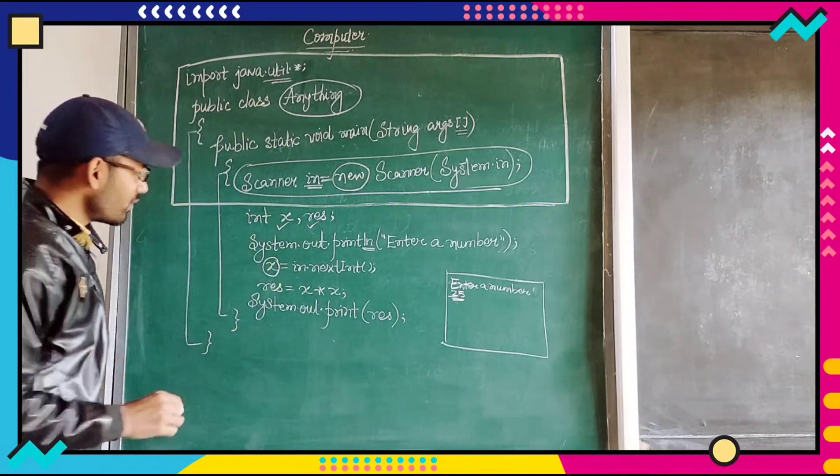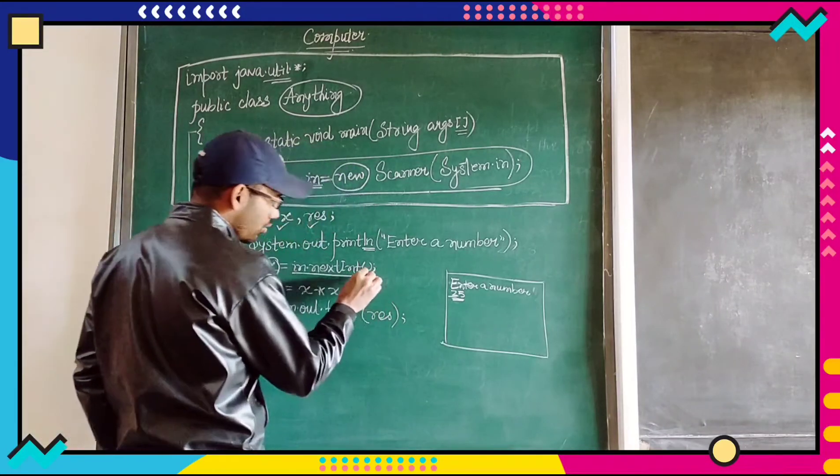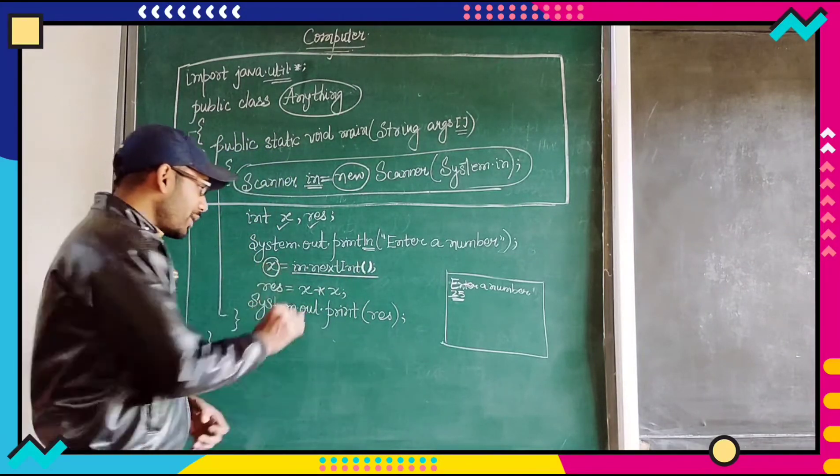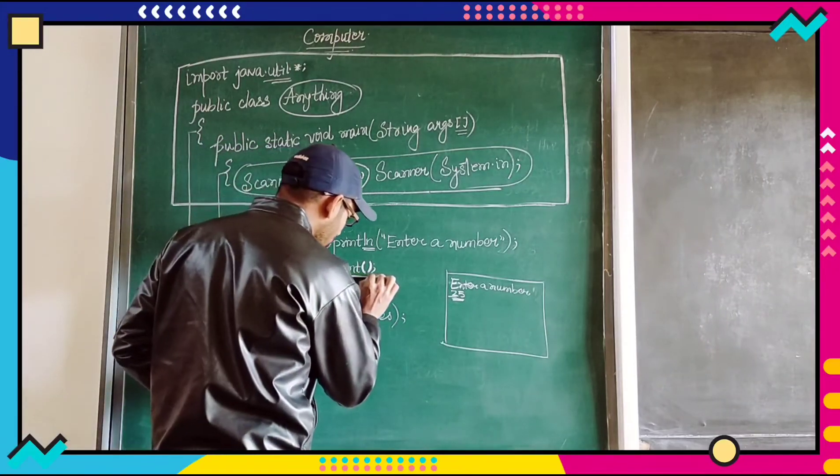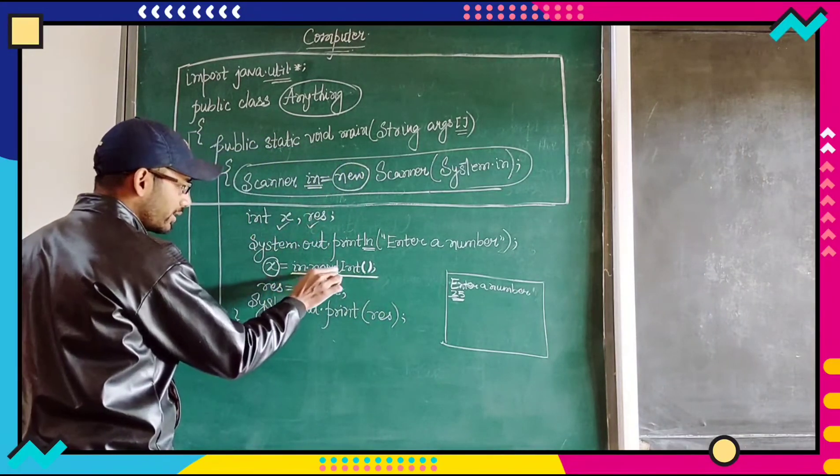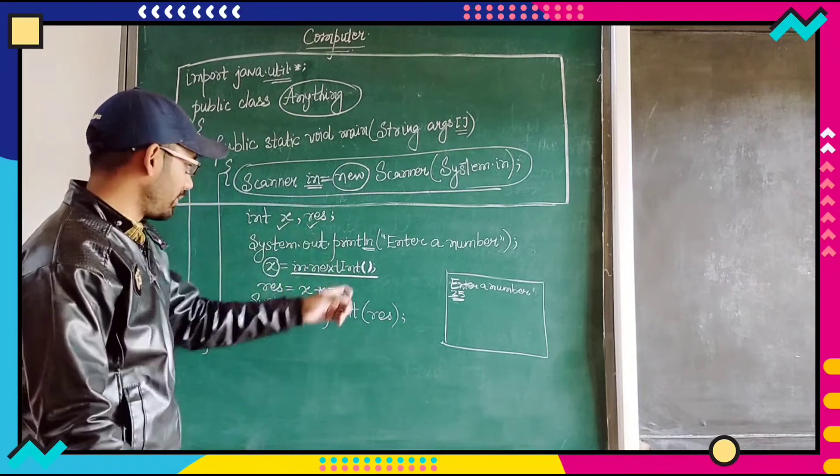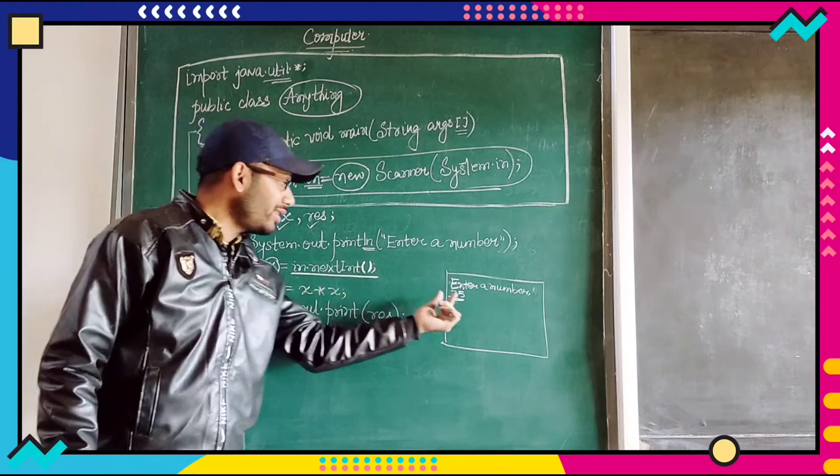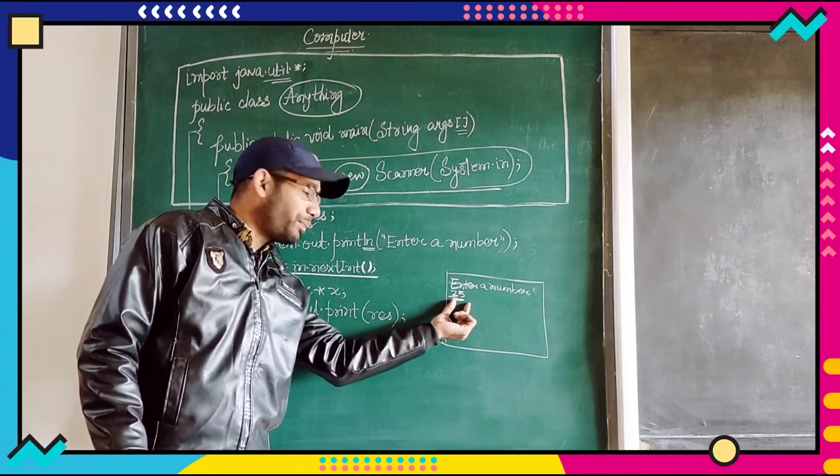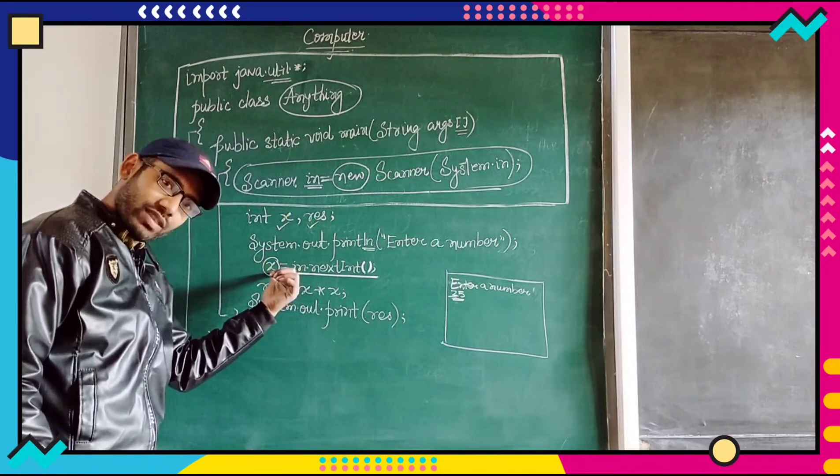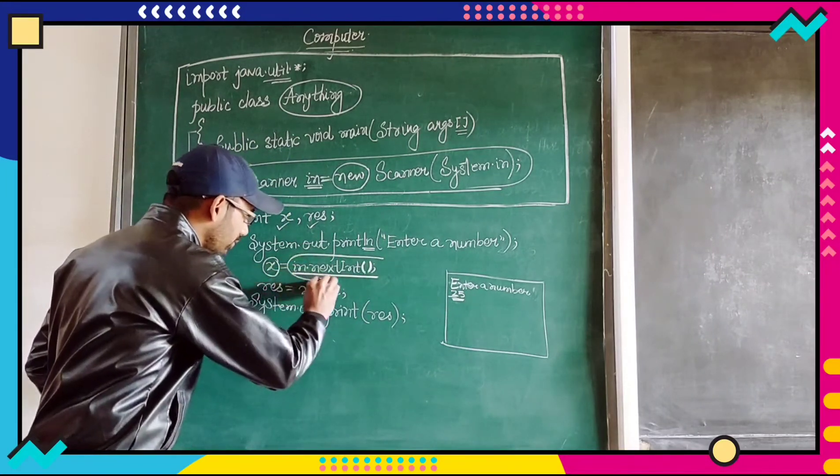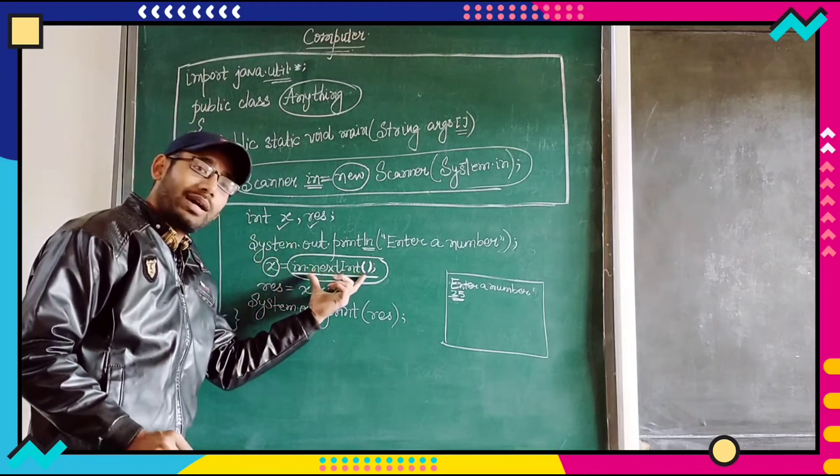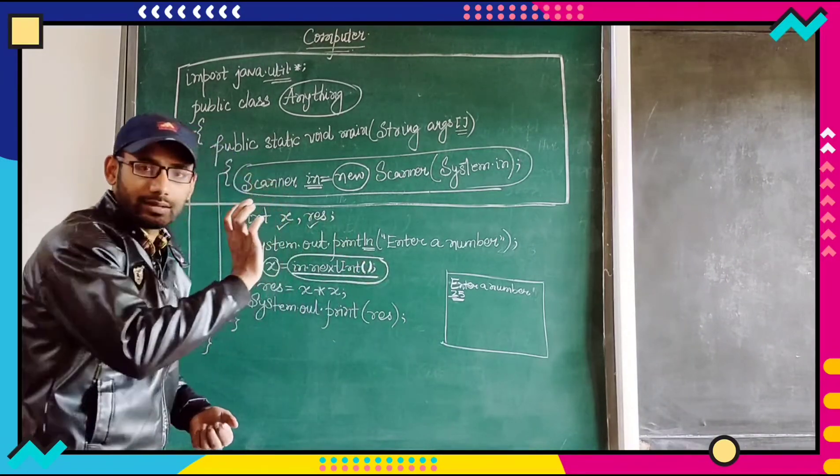As soon as the user hits enter, this 25 will get inside variable x. Why? Because of this very particular line. Parenthesis is present, that means this is a function. This command line in dot nextInt, you are supposed to memorize this line. In dot nextInt, I capital, do not forget I capital. This very line is responsible. Whatever the user gives, that very particular number will get inside x. It is because of this command line things get inside the container.